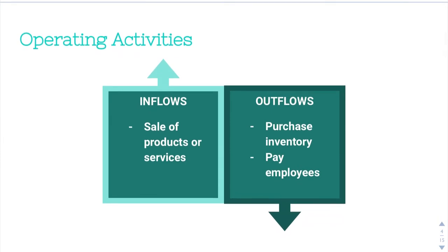So what is involved in each? For operating activities, a cash inflow would be something like the sale of products or services — when we sell products or services, that is an inflow of cash, we're making revenue and we eventually receive cash for it. Outflows could be things like the purchase of inventory or paying employees, anything that represents an expense. Inflows would be anything we receive money for in our daily operations; outflows would be anything we have to pay money for in our daily operations.